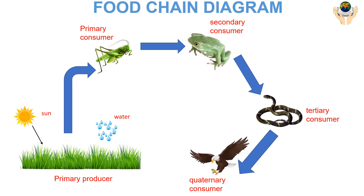A food chain is the linear sequence of organisms through which nutrients and energy pass as one organism eats another. Let's look at the parts of a typical food chain, starting from the bottom with the producer and moving up.